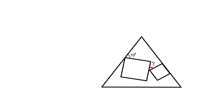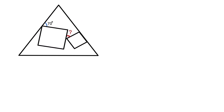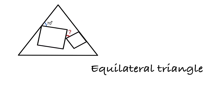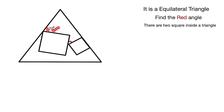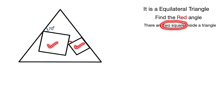Hello everyone, welcome back. Today we are going to solve this question — can you solve this? If you can, pause the video and take a try. Otherwise, let's see the solution. We have an equilateral triangle, the angle given is 20 degrees, and we have to find the red angle. There are two squares inside the triangle.